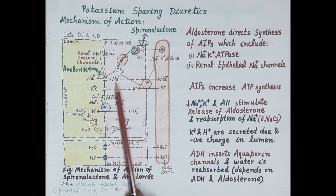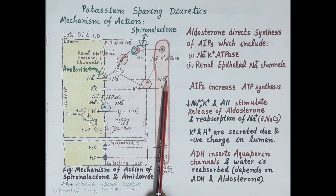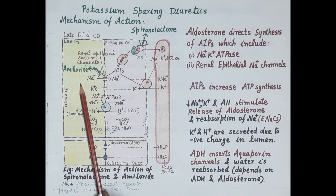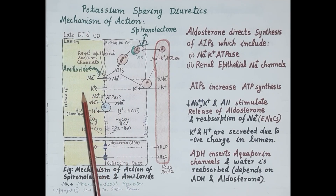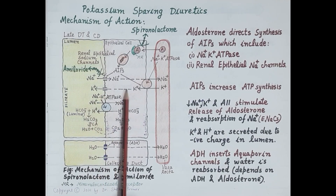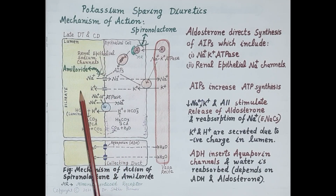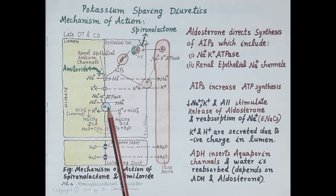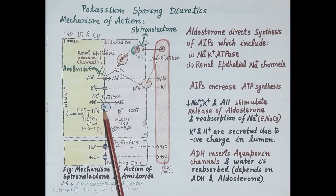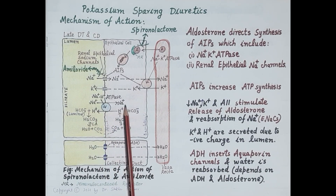If little sodium is reabsorbed, it is not transported to the blood and remains within the filtrate, passing into the urine. Since sodium is not reabsorbed, spironolactone prevents secretion of potassium ions — it prevents loss of potassium in the urine and spares the potassium. Spironolactone also inhibits aldosterone-mediated ATP synthesis, reducing functioning of sodium-hydrogen ATPase, further inhibiting sodium reabsorption.